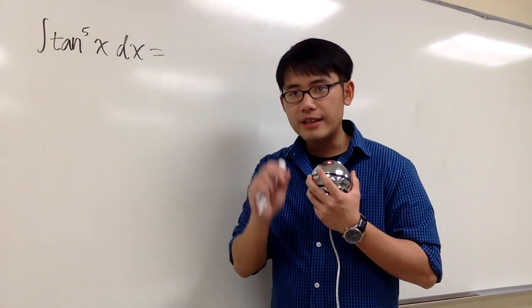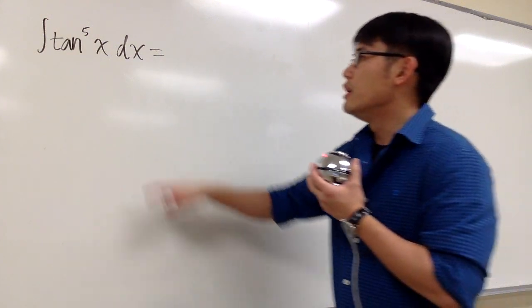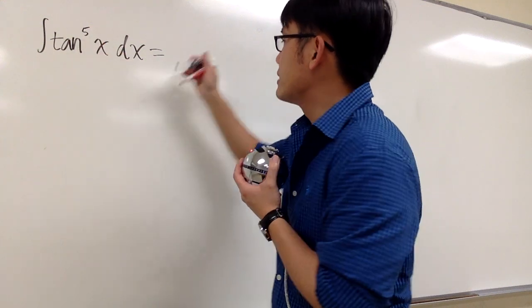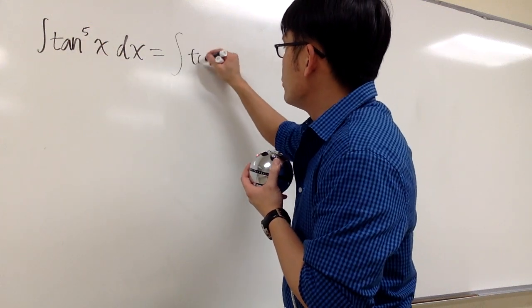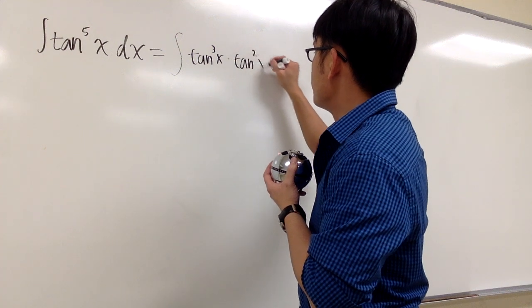And remember, we can only have tangent to the second power in order to squeeze out the secant squared minus 1. So let's look at tangent to the fifth power x. This will be tangent to the third power x times tangent to the second power x.